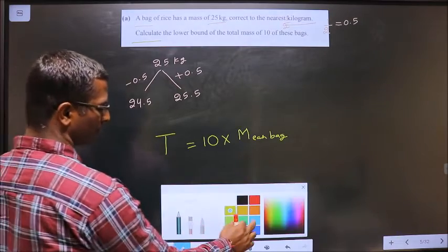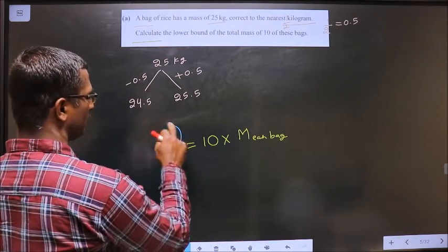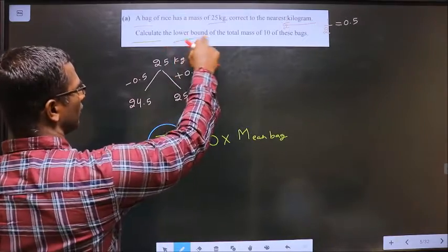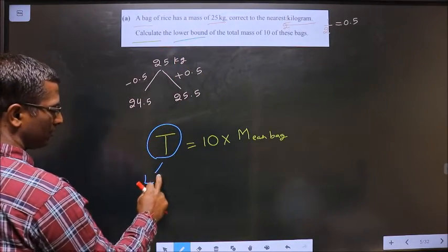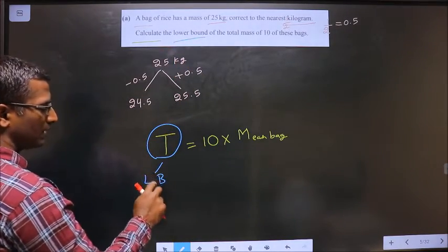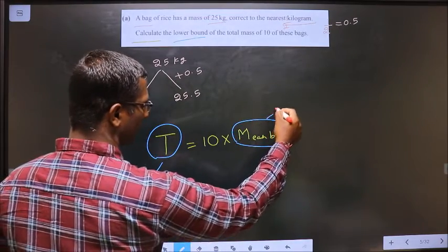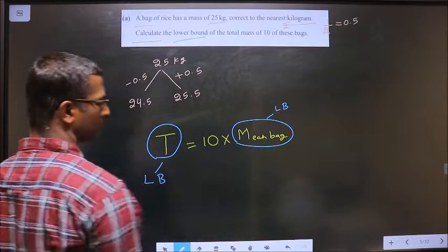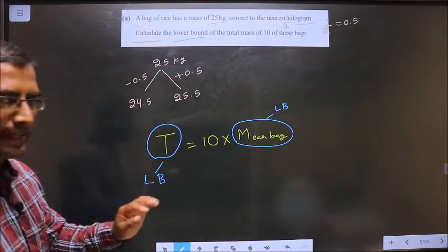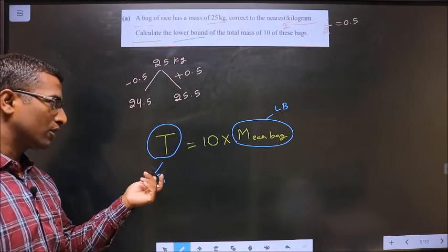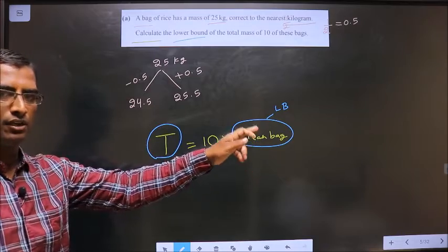Now, for this total mass, you need lower bound. To get the lower bound of this, you should take also lower bound for mass of each bag. Clear with this statement? Here you want lower bound, so here also you should take lower bound.